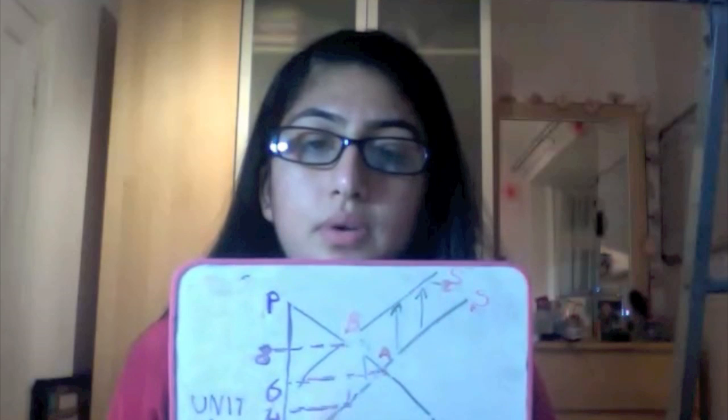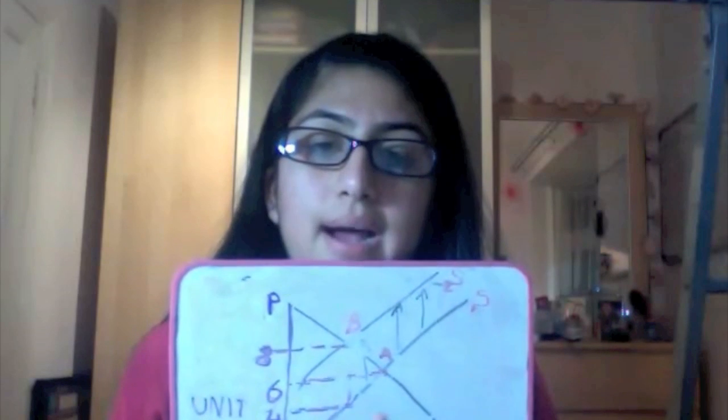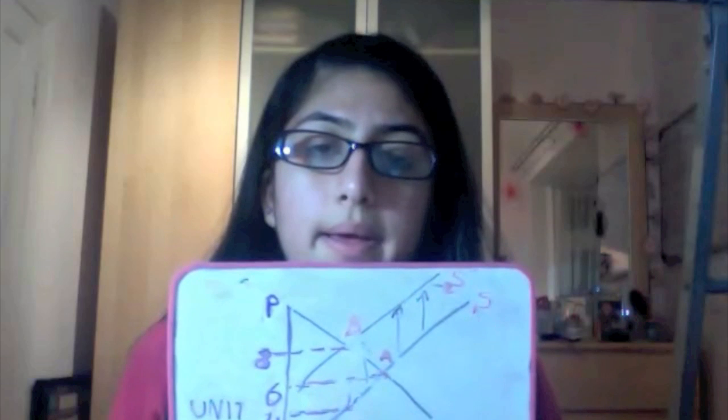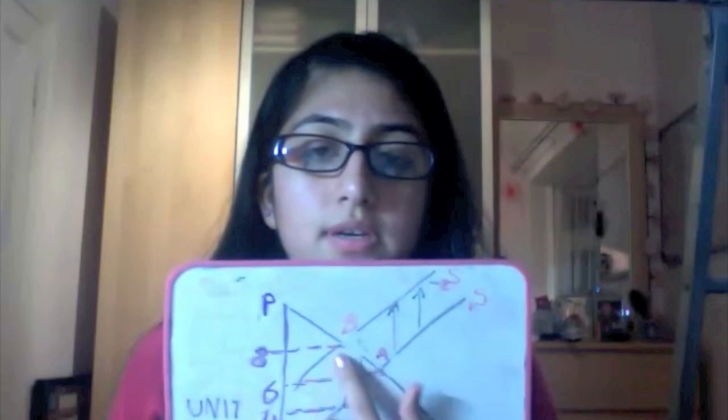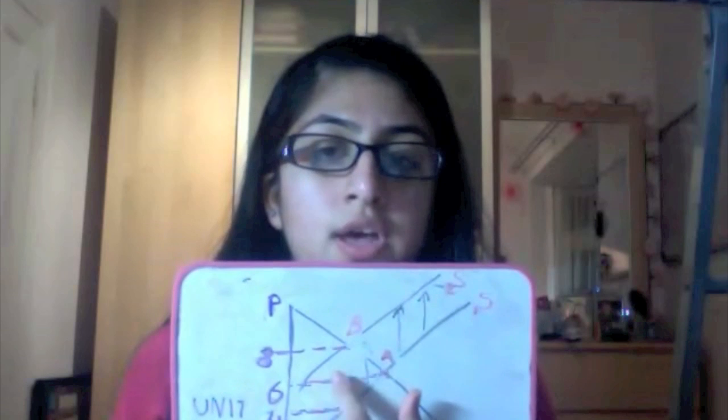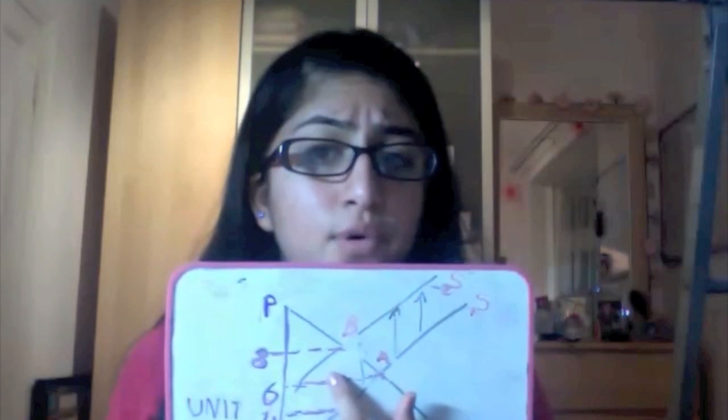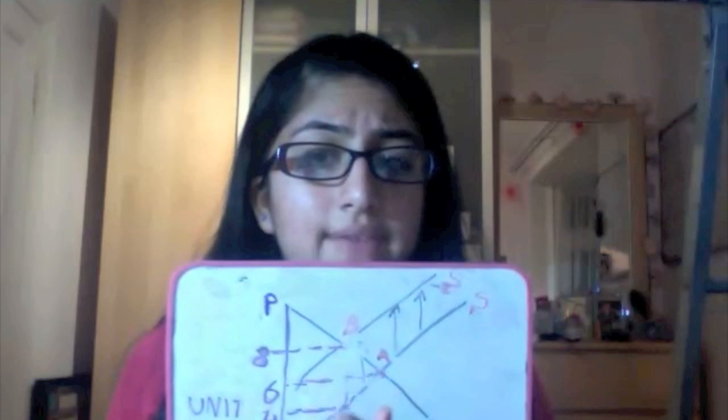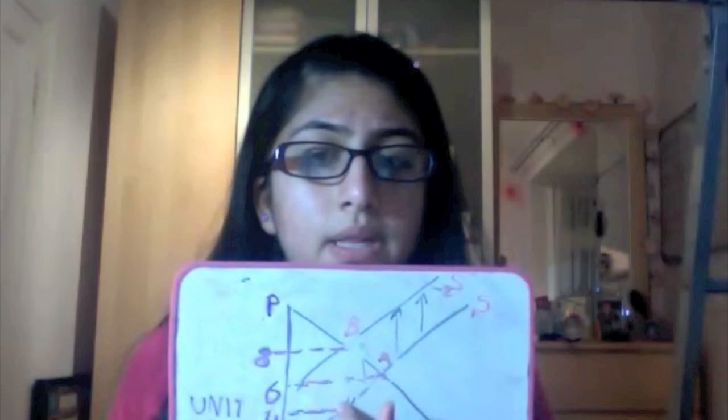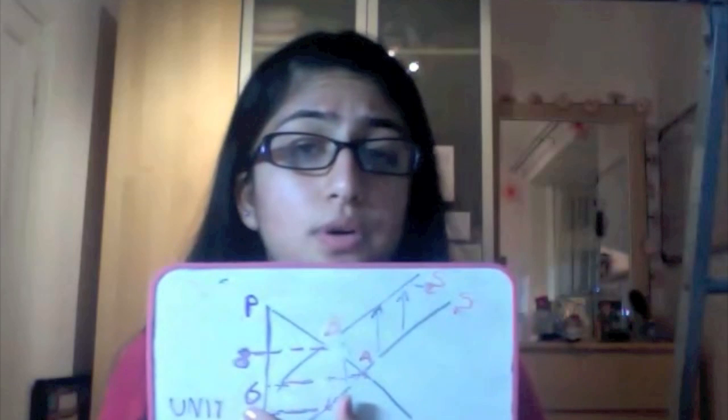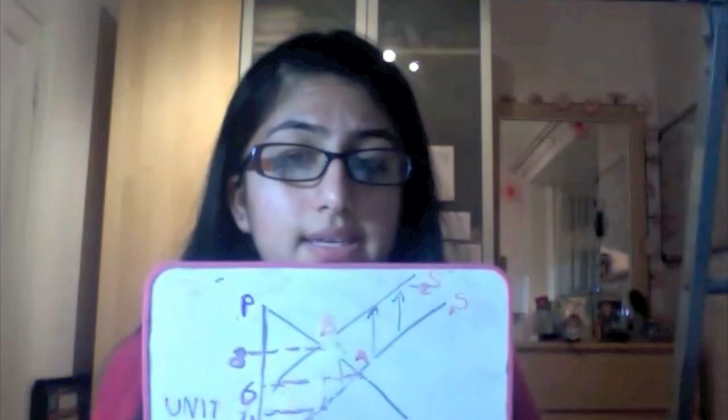So suppose it wasn't equal and we needed to find out how much the producer was paying, the producer incidence. How would we do that? Well, the consumer has only seen a £2 price change, but actually the tax is £4. So we still have £2 left. So that remaining £2 the producer is paying, times by the quantity, £100, we get £200.